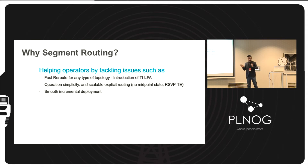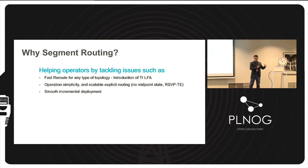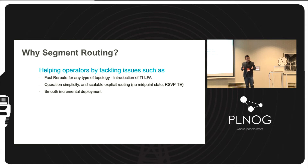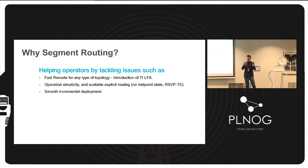There is also smooth incremental deployment. If you have a large network and you're not ready to deploy segment routing on all devices due to legacy infrastructure, you can start slowly on a specific part of the network and then gradually expand. There is a concept called a mapping server that enables both segment routing and LDP-based MPLS to coexist in the same core network. The mapping server acts as a proxy, assigning label segments to the LDP portion so they can interoperate.